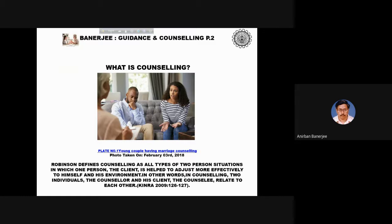Let's start with a definition of counselling. Robinson defines counselling as all types of two-person situations in which one person, the client, is helped to adjust more effectively to himself and his environment. In other words, in counselling, two individuals — the counsellor and his client, the counselee — relate to each other.